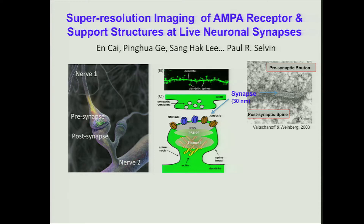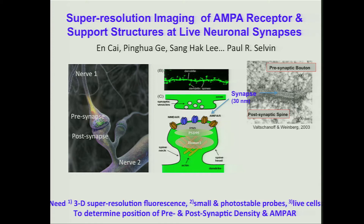The AMPA receptors are right here on the edge of the post-synaptic density, and there are a lot of proteins there to support it. What we need to do is see these in 3D, because they can be in all different orientations. We need to look at an individual one, therefore we want fluorescence. And we need to do it with super-resolution, because this distance is about the diffraction limit of light — so we would like to see the organization of the AMPA receptor with nanometer resolution.